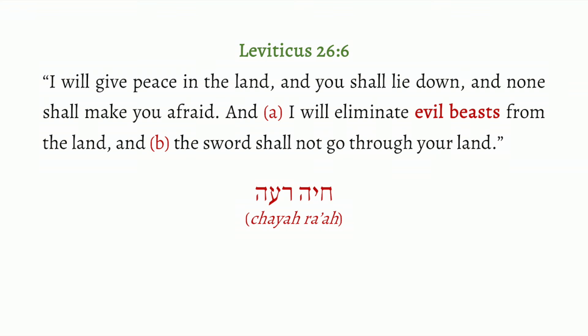Let's look at the evil beasts first. The phrase translated 'evil beast' is chaya, meaning 'living creatures,' and ra'ah, which means not morally wicked but those things that can cause unpleasantness, danger, and death — things like lions, bears, poisonous serpents, and wolves. So how will God eliminate these evil beasts? Just reading this passage, you might think He will simply remove these animals from the land.